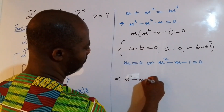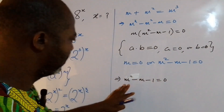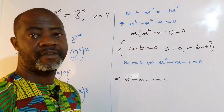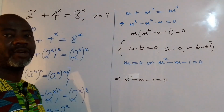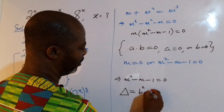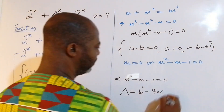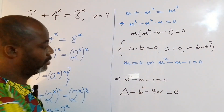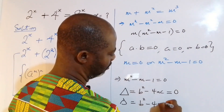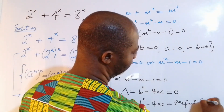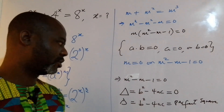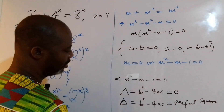We bring down m squared minus m minus 1 equal to 0. Looking at this, we can notice that this quadratic equation is not factorizable. To confirm, we find the discriminant delta, given by b squared minus 4ac. If delta equals 0, or if delta is equal to a perfect square, then the equation has linear factors.